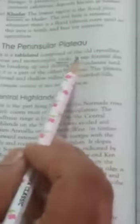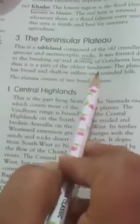Now we will discuss the Peninsular Plateau. This is a tableland composed of old crystalline, igneous and metamorphic rocks. Some rocks are hard, some are soft and some are very hard. It was formed due to the breaking up and drifting of Gondwanaland. Thus, it is a part of the oldest landmass. The plateau has broad and shallow valleys and rounded hills. This plateau consists of two broader divisions.